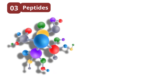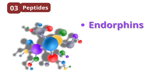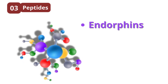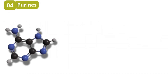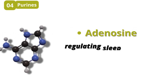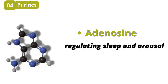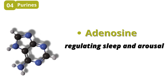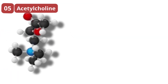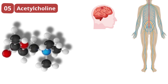Peptides are small proteins that act as neurotransmitters. An example is endorphins, which are your brain's natural painkillers — think of endorphins as the body's version of morphine, helping you feel good and reducing pain. Purines, such as adenosine, are less well known but important in regulating sleep and arousal. Adenosine is what caffeine blocks to keep you awake. Mnemonic: 'Adenosine Adds Sleep.'